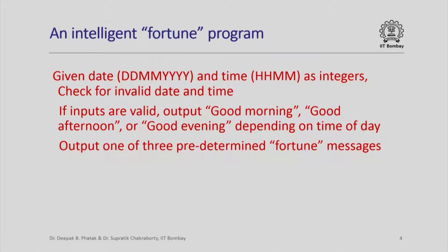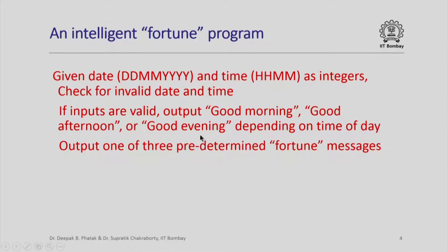Here is a specification of a slightly intelligent fortune program. This program is going to take date and time as integer inputs — the date in date-month-year format and the time in hour-minute format. It will first do a check for invalid date and time. If the inputs are valid, it will output one of three messages — good morning, good afternoon, or good evening — depending on the time of day, and after that it will print one of three predetermined fortune messages.